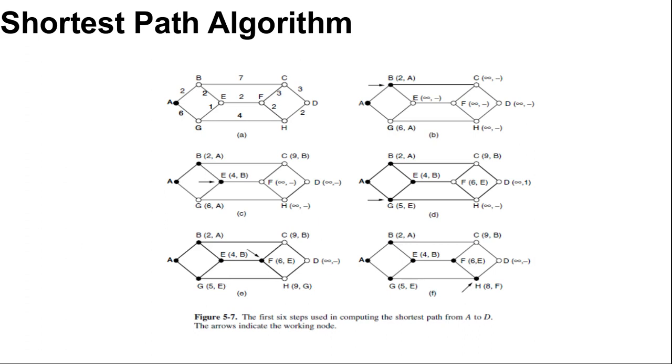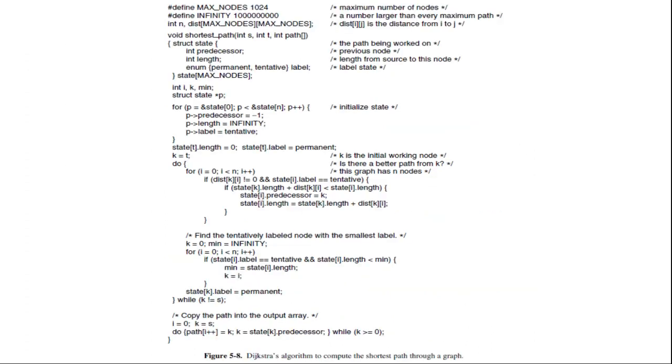Suppose that there were a shorter path than A, B, E, say A, X, Y, Z, E for some X and Y. There are two possibilities: either node Z has already been made permanent or it has not been. If it has, then E has already been probed, and so the A, X, Y, Z, E path has not escaped our attention. Consider the example where Z is still tentatively labeled. If the label at Z is greater than or equal to that at E, then X, Y, Z, E cannot be a shorter path than A, B, E. If the label is less than that of E, then Z and not E will become permanent first, allowing E to be probed from Z. So the algorithm here is Dijkstra's algorithm to compute the shortest path through a graph.